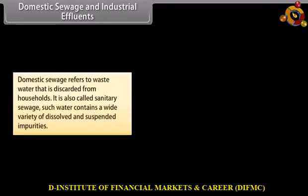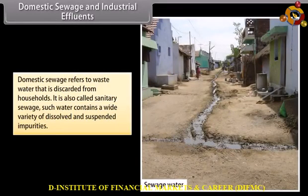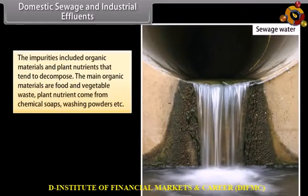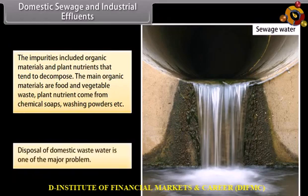Domestic sewage and industrial effluence. Domestic sewage refers to wastewater that is discarded from households, also called sanitary sewage. Such water contains a wide variety of dissolved and suspended impurities. The impurities include organic materials and plant nutrients that tend to decompose. The main organic materials are food and vegetable waste. Plant nutrients come from chemical soaps, washing powders, etc. Disposal of domestic wastewater is one of the major problems.